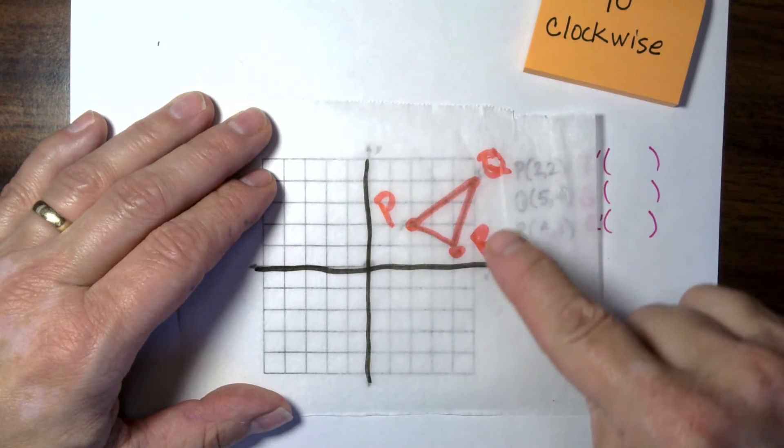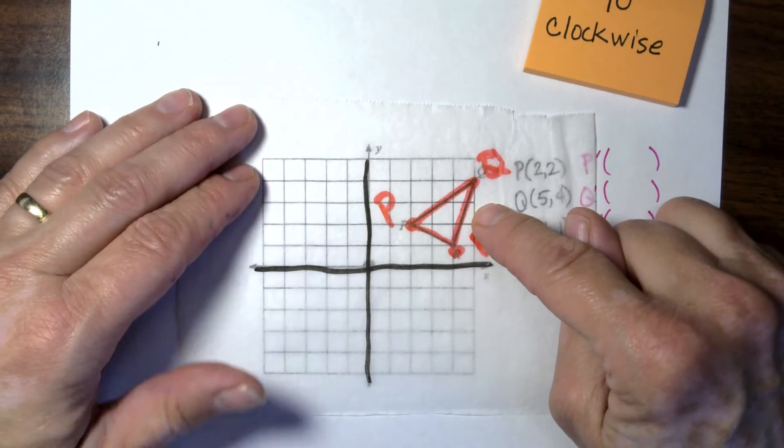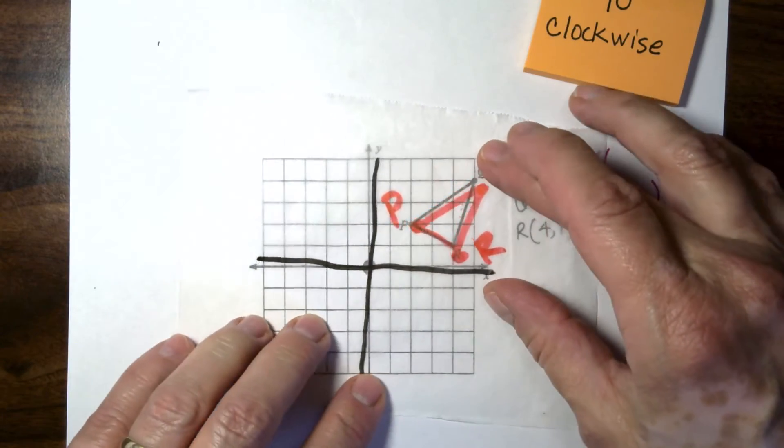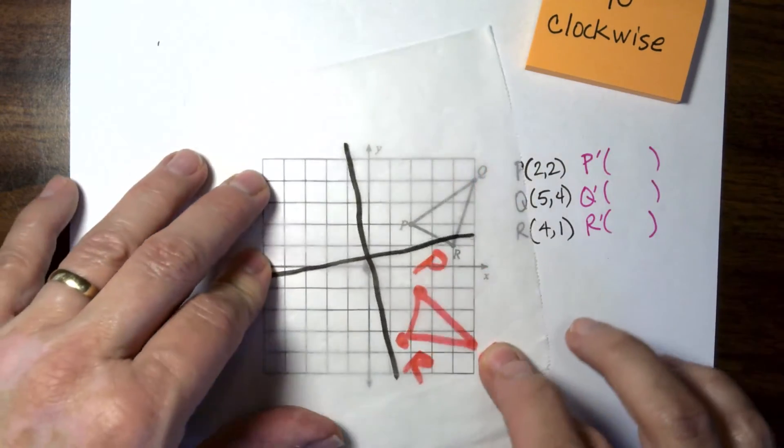They'll come up with the algebra shortcuts on their own, or at least they'll understand those algebra shortcuts easier and faster when you teach them to them. Okay, so we're going to be going 90 degrees clockwise. Clockwise is going with the clock. Well, here is the original triangle. Those are the original points. 90 degree turn means you just go one click. Click.